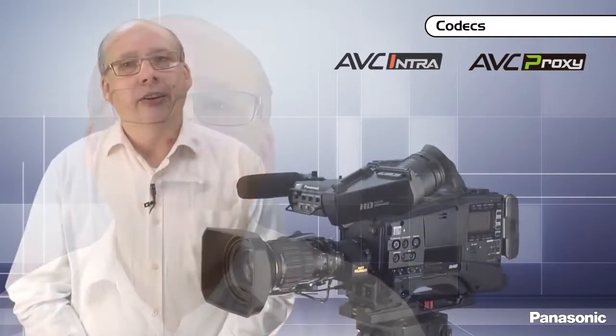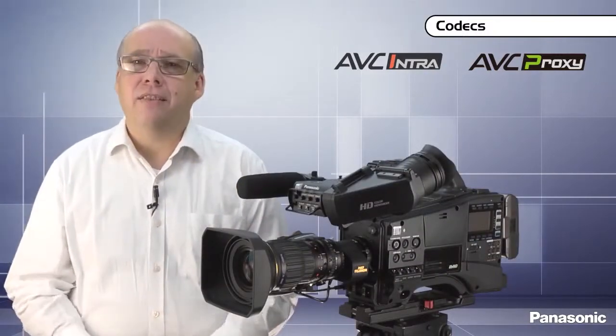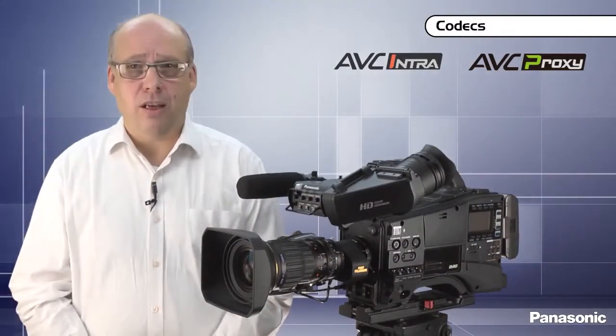The HPX600 already supports several H.264 codecs, AVC Intra Class 100 and Class 50, as well as AVC Proxy with several bit rates between 1 and 3 megabits per second. The family will be extended in 2013 with additional codecs.